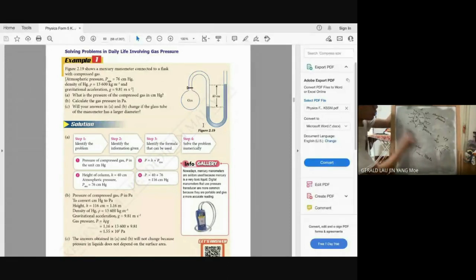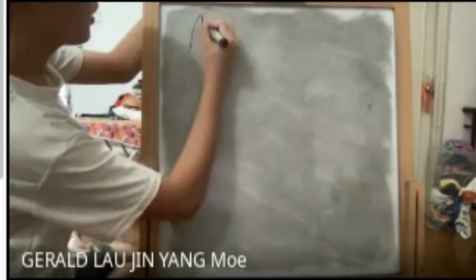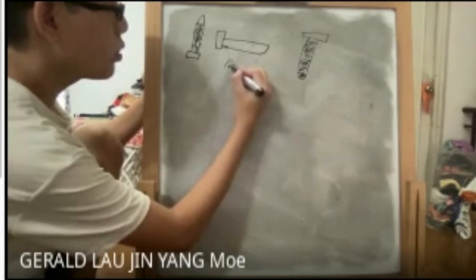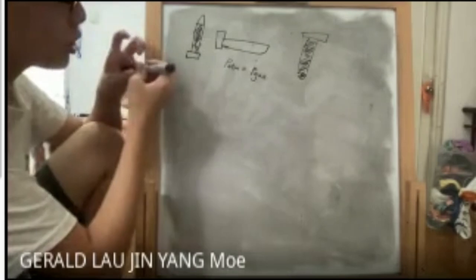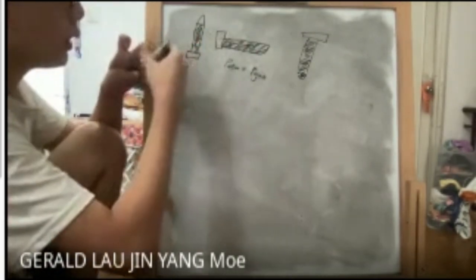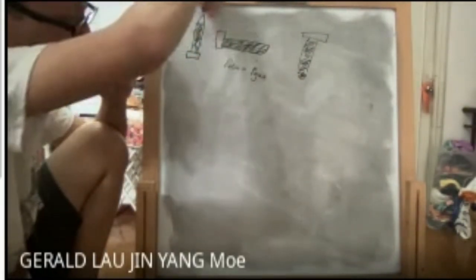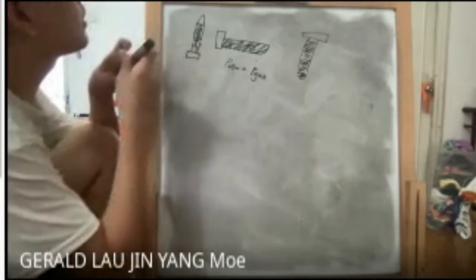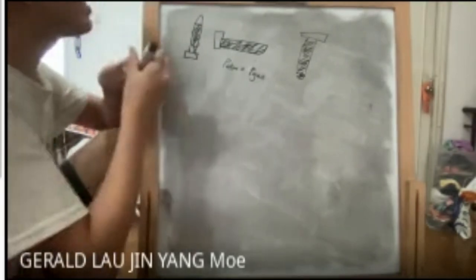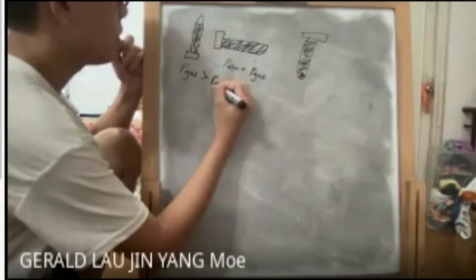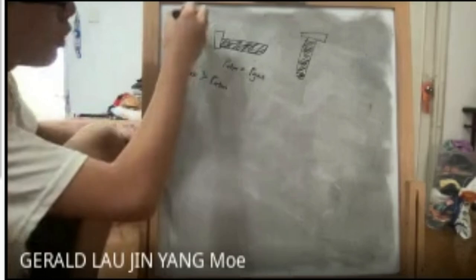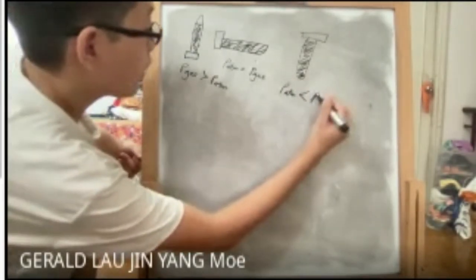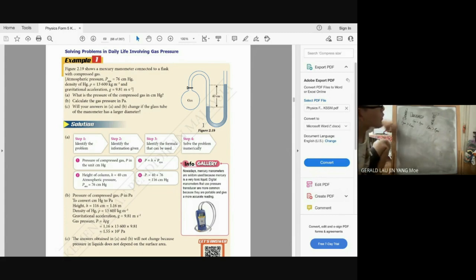There are three positions of the manometer to understand. Horizontal: atmospheric pressure equals gas pressure. When the mercury column is pushed toward the open end, gas pressure is higher than atmospheric pressure. The opposite arrangement means atmospheric pressure is greater than gas pressure.